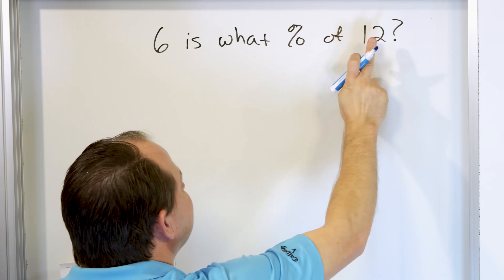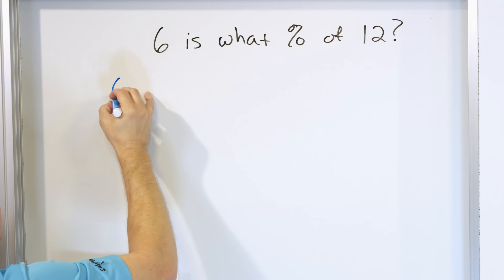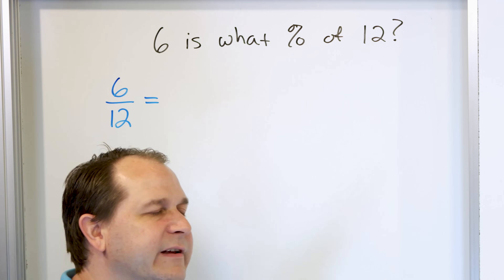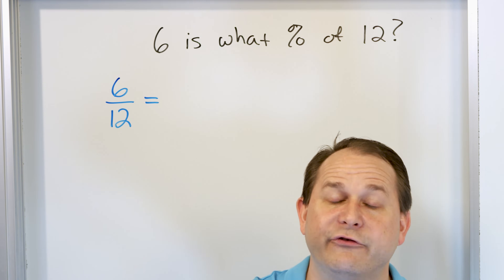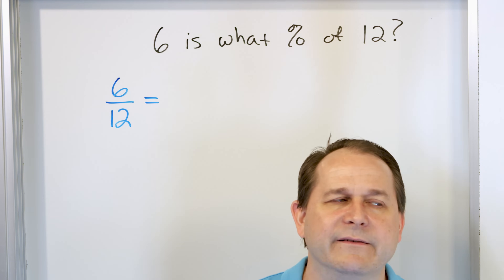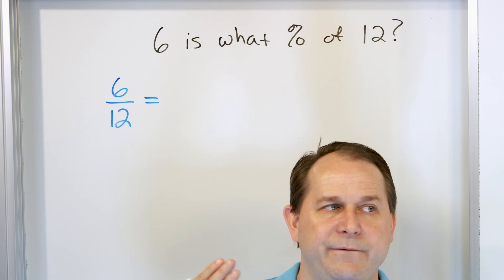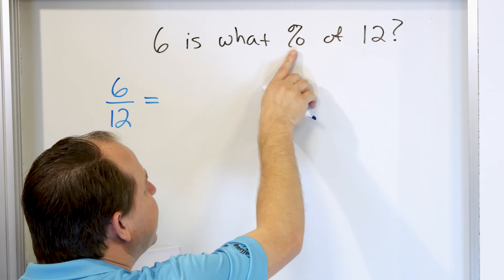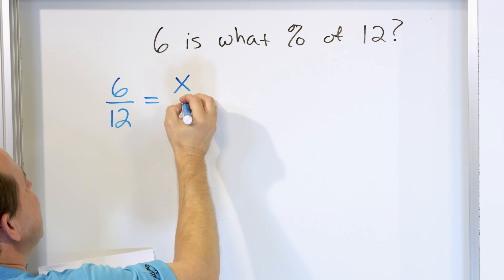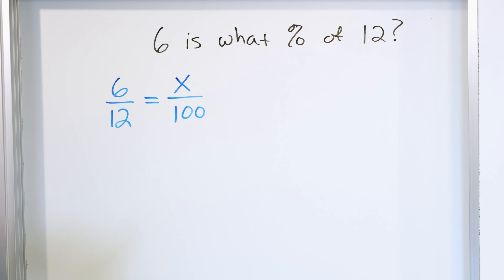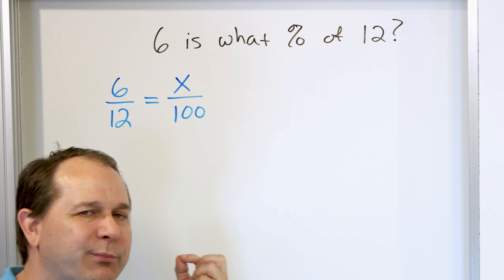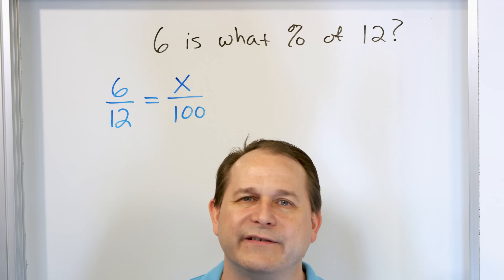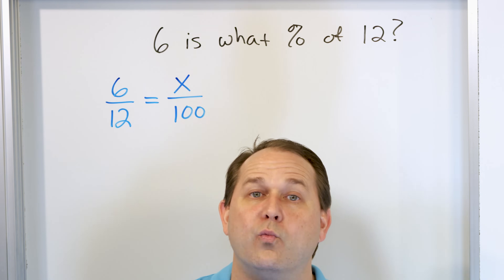What we're saying is six as compared to 12 — you write that as a ratio. Six as it compares to 12 is equal to some percentage. What does it mean to be a percentage? A percentage is how much of something compared to 100, because that's what percent means. 50 percent is 50 out of 100. 10 percent is 10 over 100. 5 percent is 5 over 100. Here we're trying to figure out what is the percent, so we're going to call it x, an unknown, over 100. This is what we have to solve. Doesn't this look like a proportion? We already learned how to solve proportions. And now you're learning one reason why we did that.